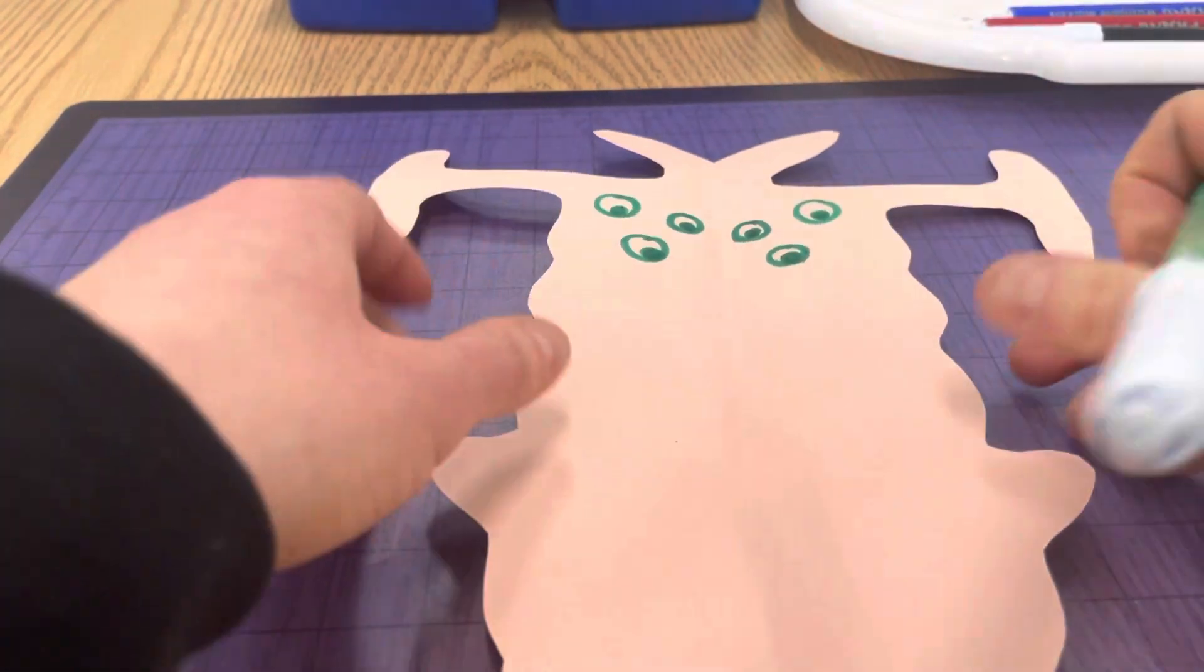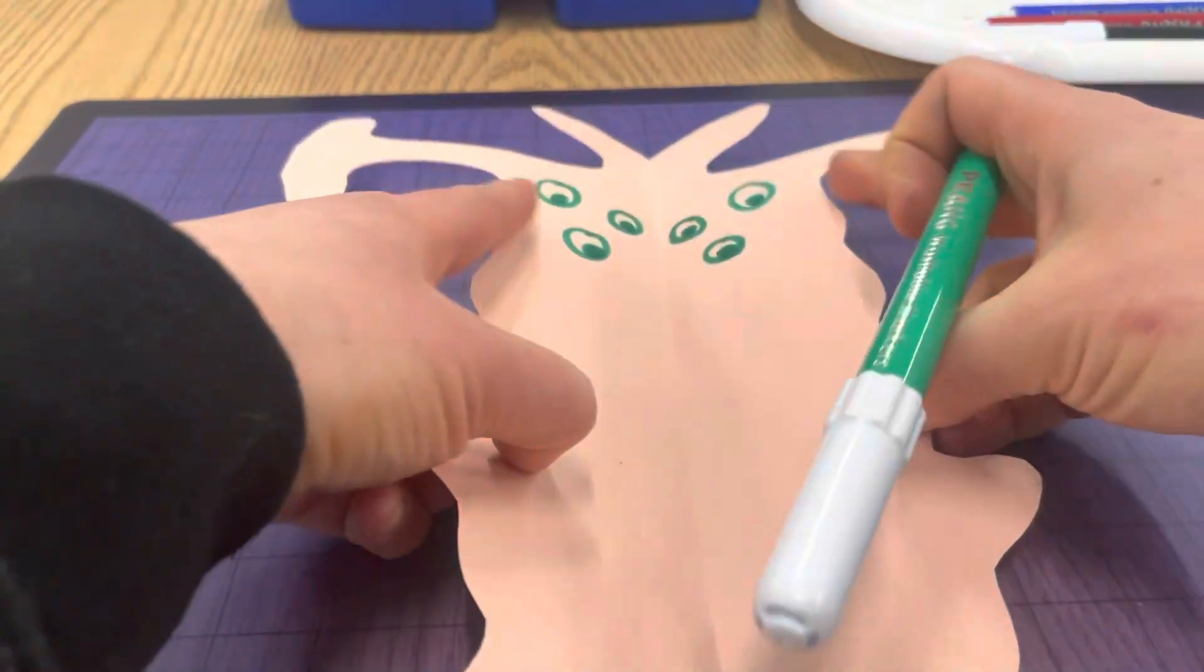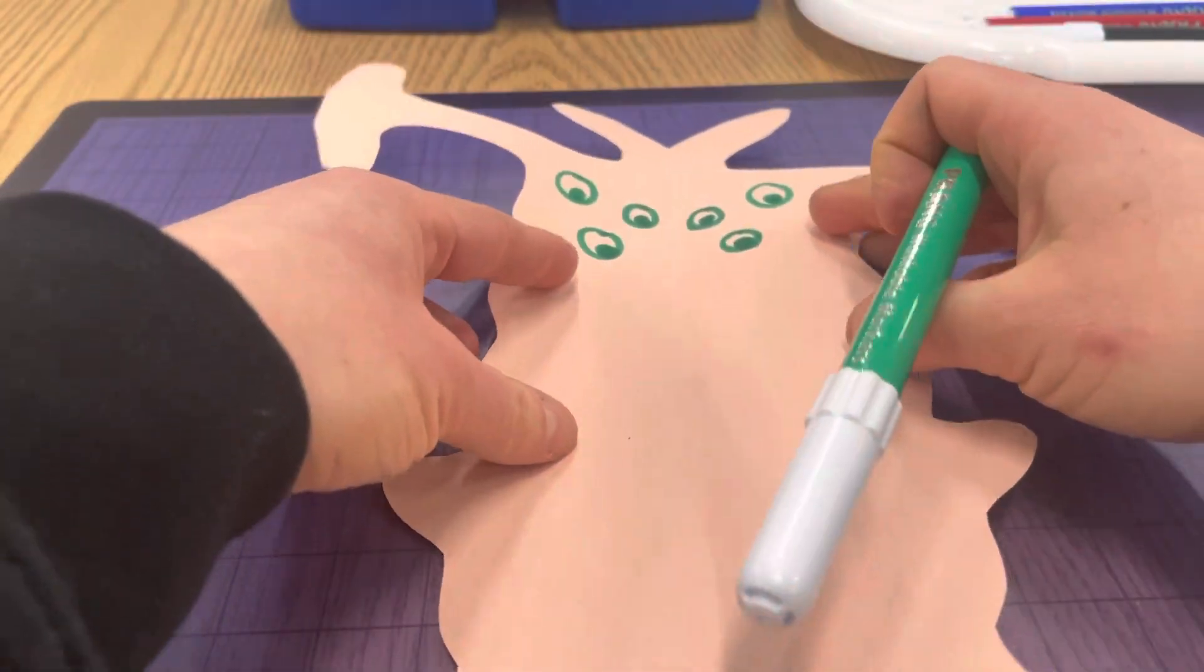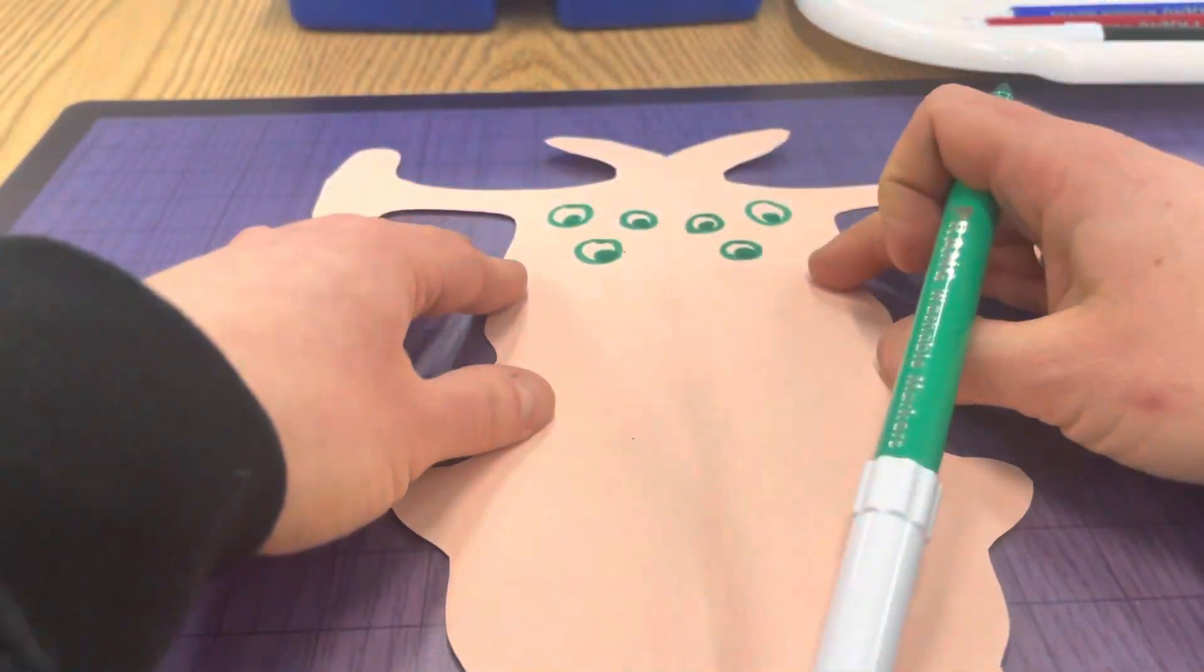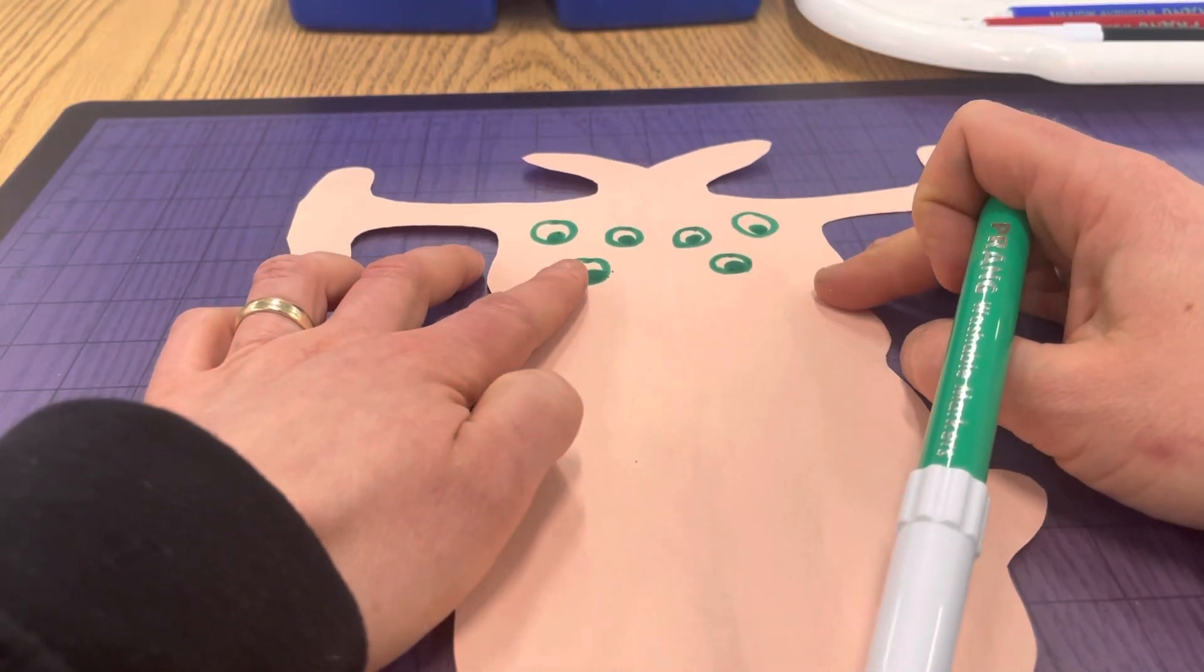If you're not sure about where one goes, think about if you were to close it, would they be touching? If so, yes, then it is symmetrical. If not, then it's not. Okay.